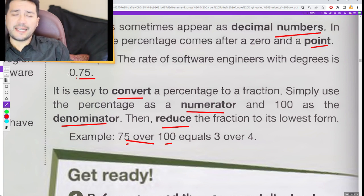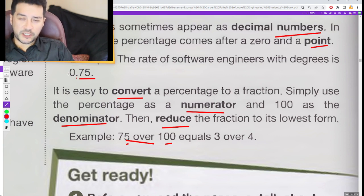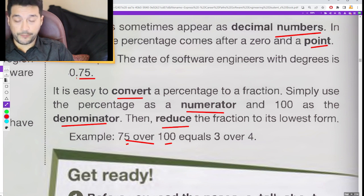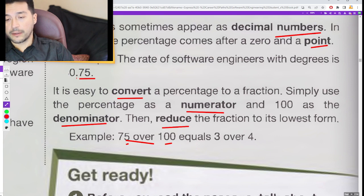It is easy to convert a percentage to a fraction. Simply use the percentage as a numerator and 100 as the denominator. Then reduce the fraction to its lowest form. Example: 75 over 100 equals 3 over 4.